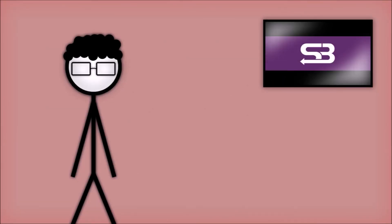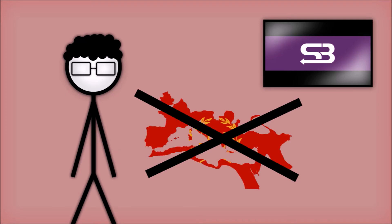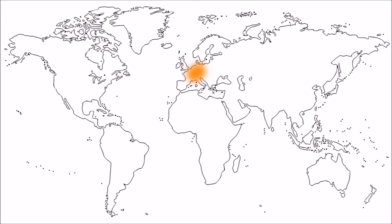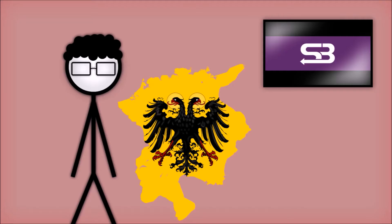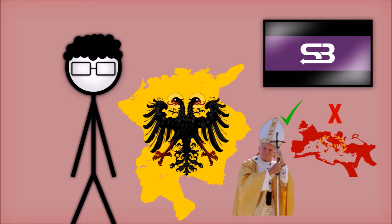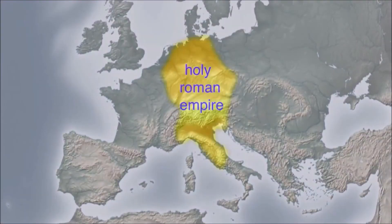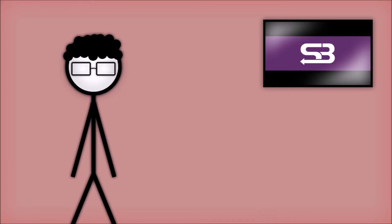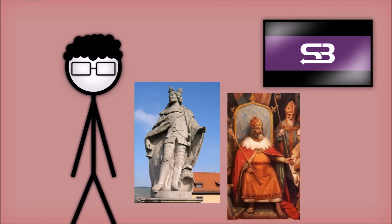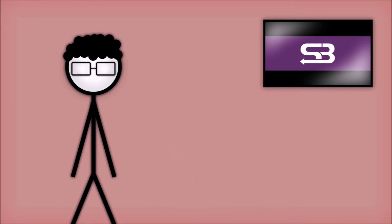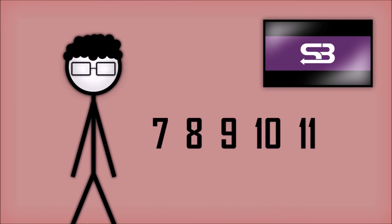Feudalism originated in many places at once, mostly after the fall of Rome. The first feudal governments in Europe were in what is now France and Germany, and with the Holy Roman Empire — which was holy, but not Roman, nor an empire. These were instituted by people like Pippin and Charlemagne. Through the 7th to 11th centuries, feudalism was going strong.